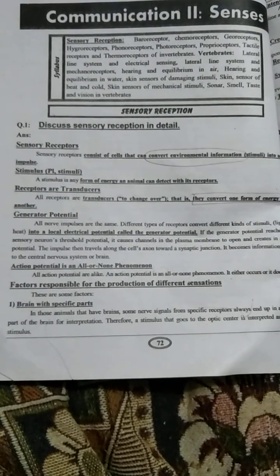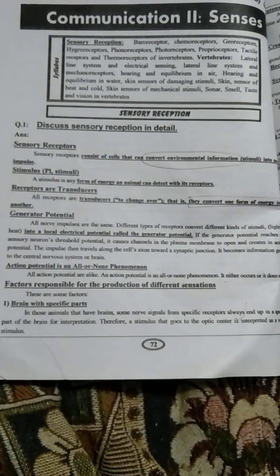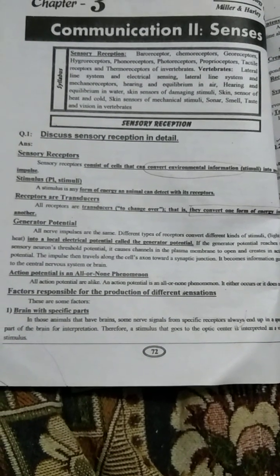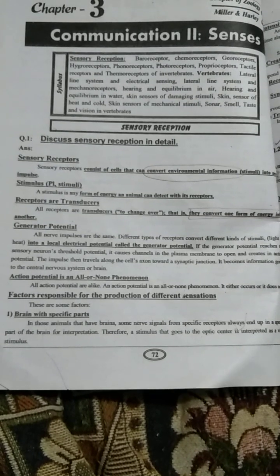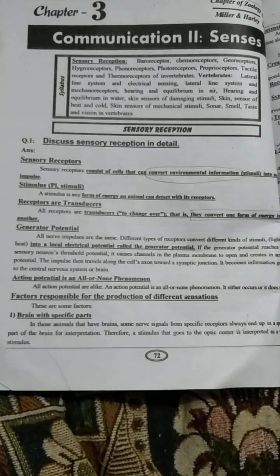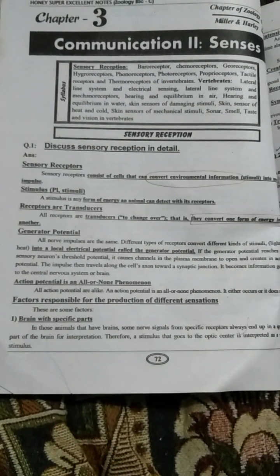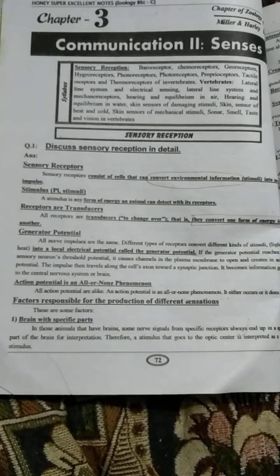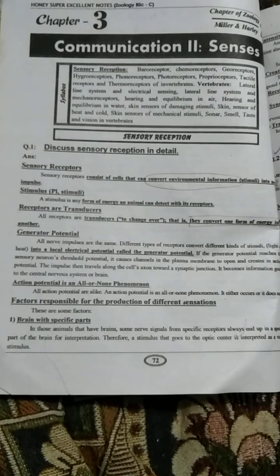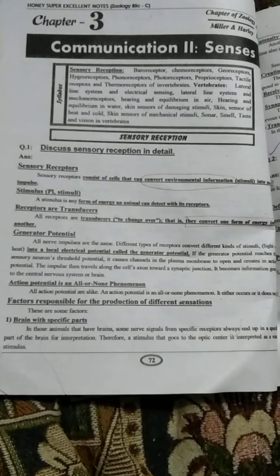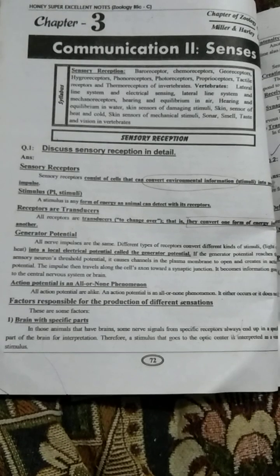All receptors are transducers — that is, they convert one form of energy into another. Different types of receptors convert different kinds of stimuli, such as light or heat, into a local electrical potential called the generator potential.